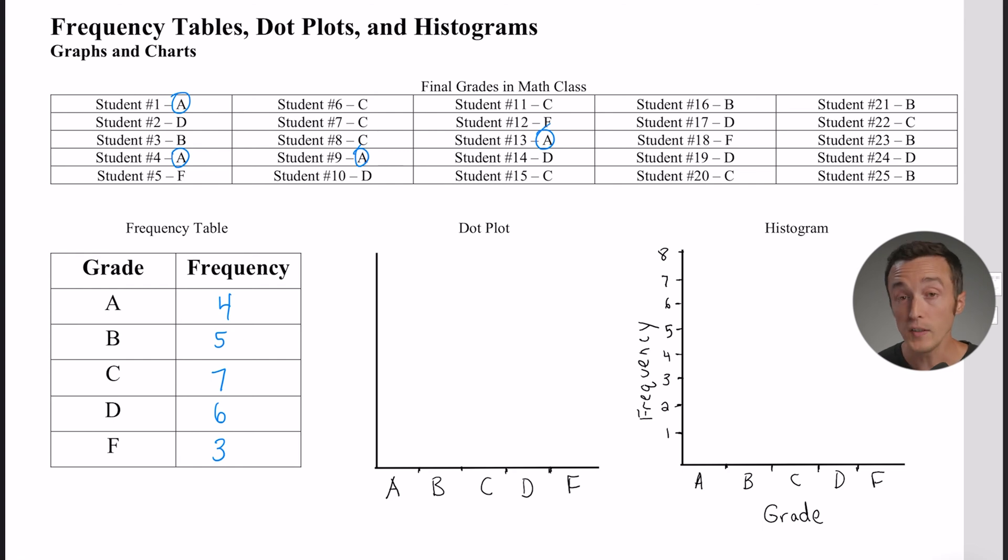So we just got done saying that there were four students that got an A. On this dot plot, instead of using dots, I'm going to actually use X's. I'm going to go in that little category for A and put four X's, or you could use dots or check marks or smiley faces or whatever you want.